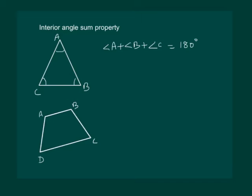Now let us try to find the sum of the interior angles of this quadrilateral. Notice that it is a convex quadrilateral and we are going to deal with only convex polygons. To find the sum of the angles, let us draw a diagonal and divide this quadrilateral into two triangles — say we draw BD.